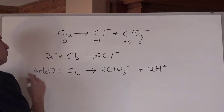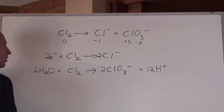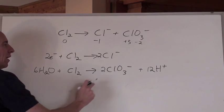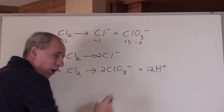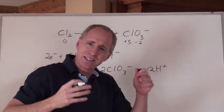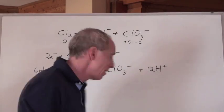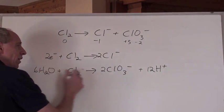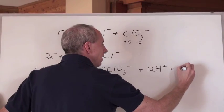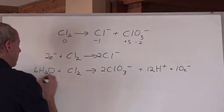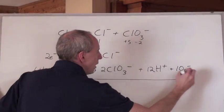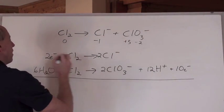Now, you balance in terms of atoms, but not electrically. Zero total on this side. Here, two negatives and twelve positives. That means ten positives on that side. But they've got to equal the zero over here. So you've got to add ten electrons over here. And now, ladies and gentlemen, you have your oxidation and your reduction half reaction.